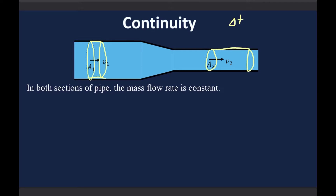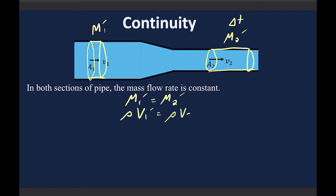At point 2, the water flows through a corresponding volume. At points 1 and 2 we'd have the same mass flow rate — that's M prime — and those would be equal: M1 prime equals M2 prime. The mass of the water is the density of the water rho times the volume flow rate at both points. In both cases it's water, so on the left and the right the density of water cancels out, and we have the volume flow rate at 1 equals the volume flow rate at 2.